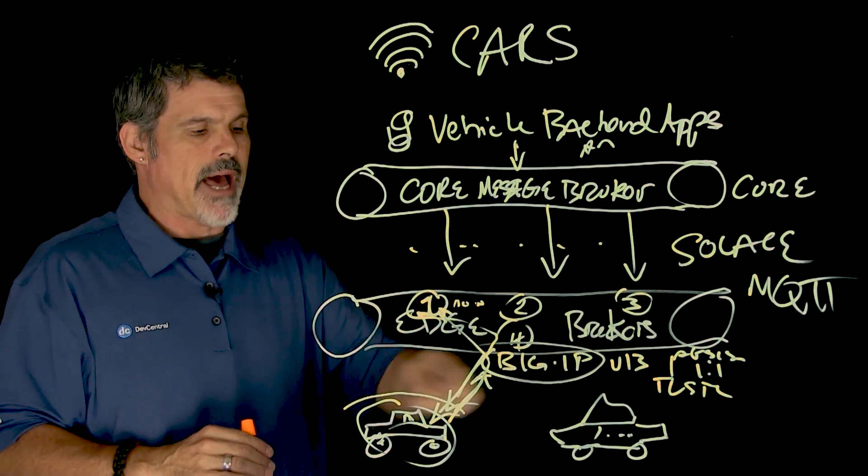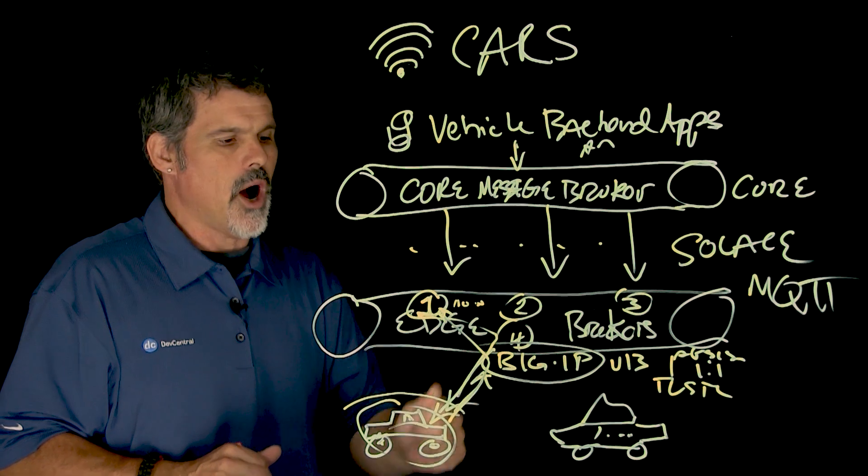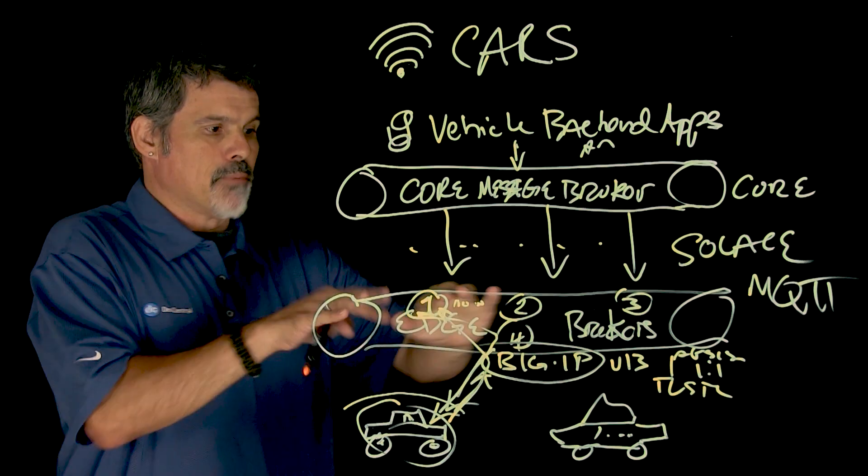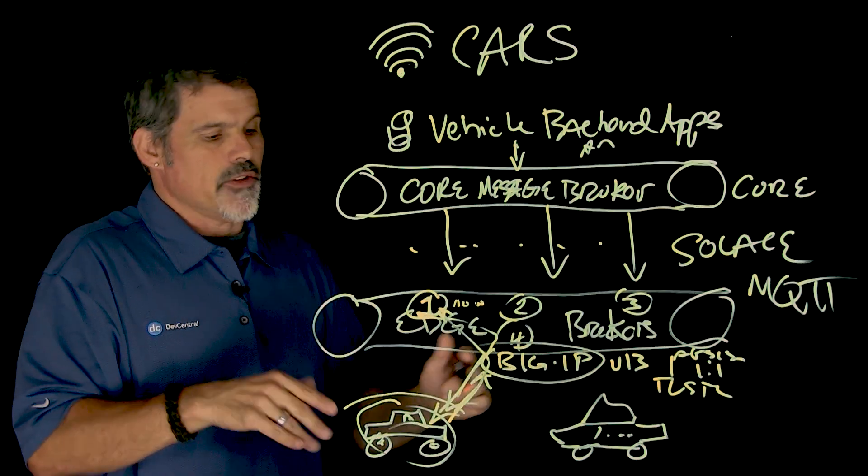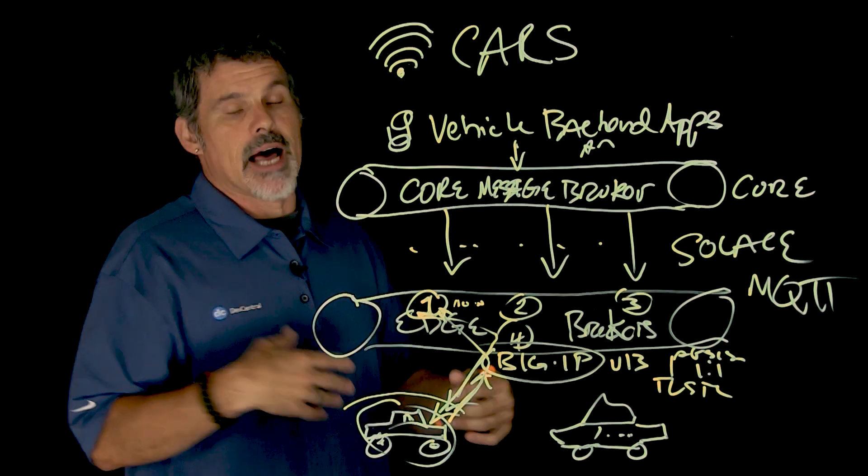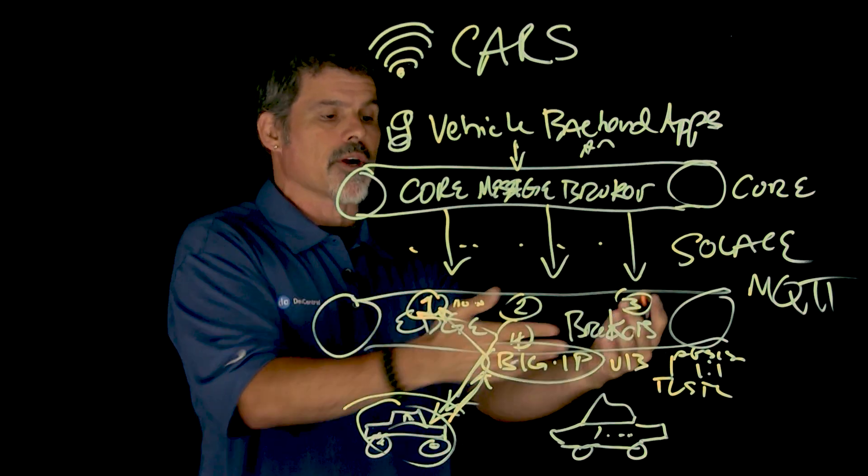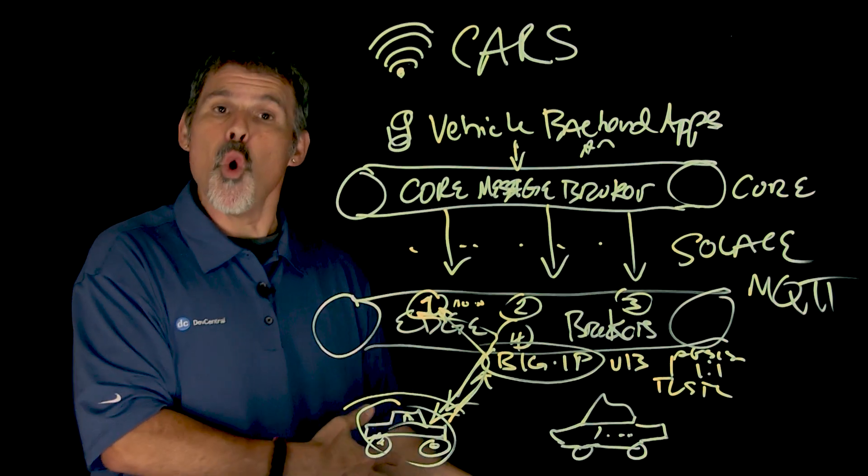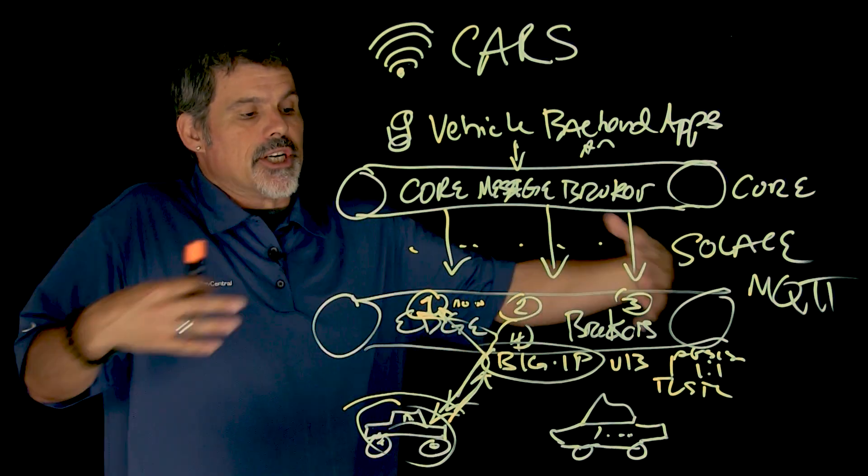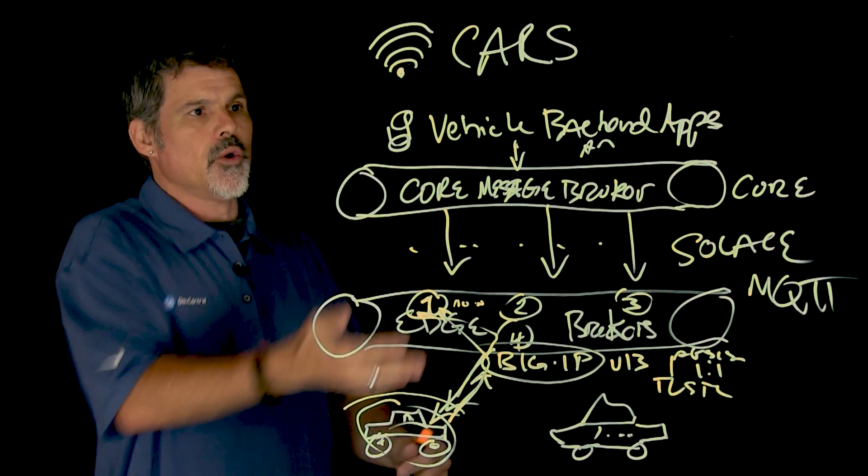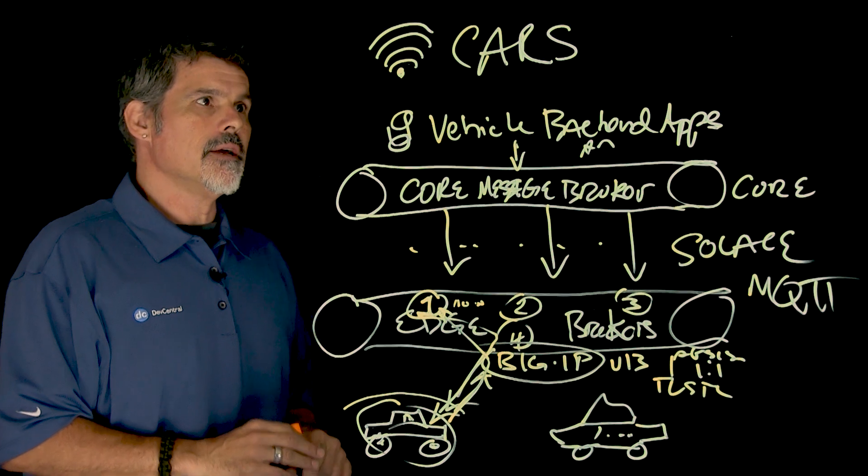one doesn't have to necessarily worry about the other, but BIG-IP will keep that persistence, the one-to-one, and the protection of the brokers, so that you can just keep adding more cars online. And if necessary, you add another broker, and that broker becomes part of the pool, and you just continue to grow your fleet within this connected car infrastructure.